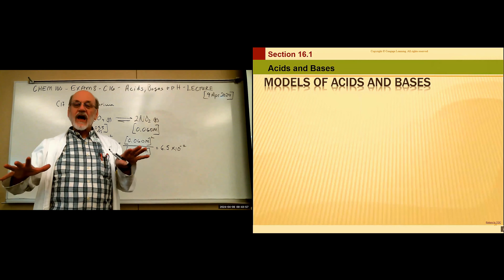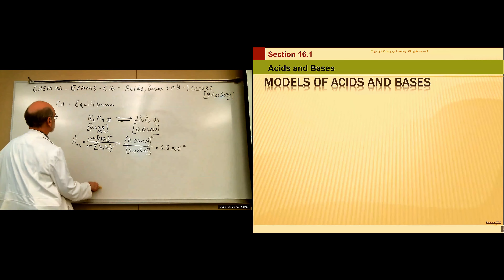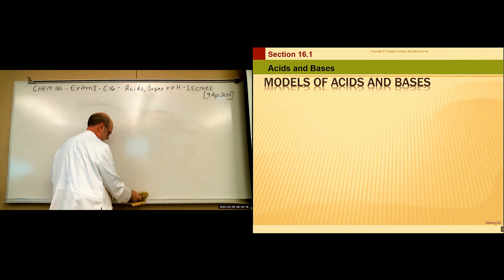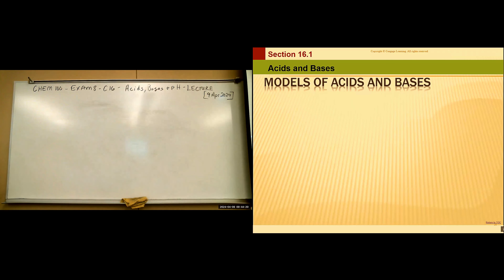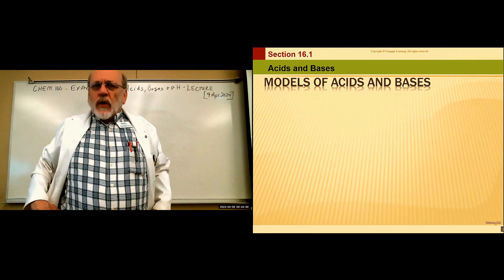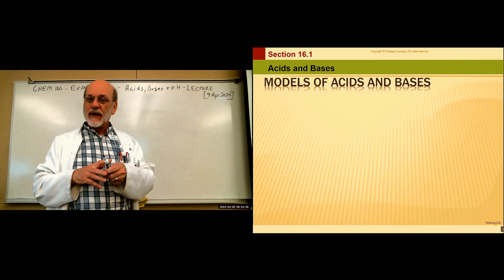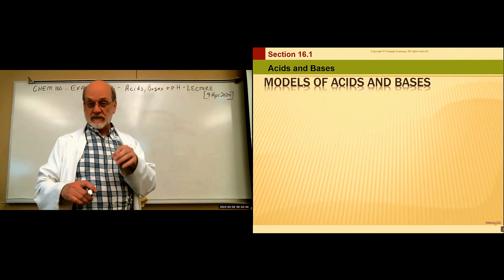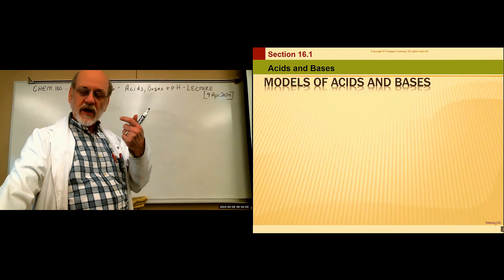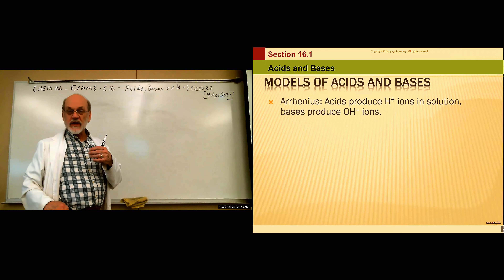Now we can take these equilibrium concepts and talk about acids and bases. When we were naming acids, we recognized an acid by its leading hydrogen. There are several theories about what constitutes an acid and a base. The first one historically was proposed by the Swedish scientist Arrhenius.